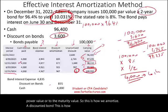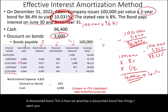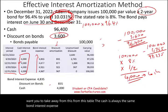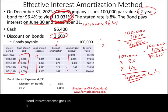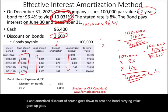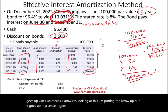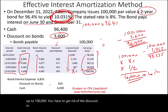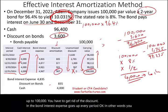A few key takeaways from this amortization table for a discounted bond: The cash payment is always the same. Bond interest expense goes up each period. Unamortized discount goes down to zero. And the bond carrying value goes up — from $96,400 up to $100,000. You have to get rid of the discount, and the bond interest expense goes up every period, meaning you are amortizing more each period.